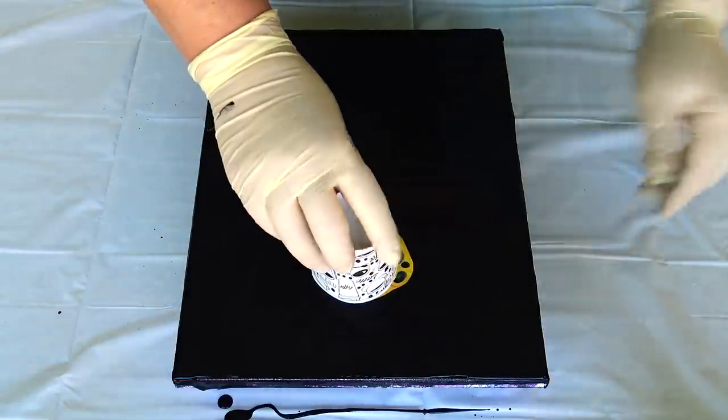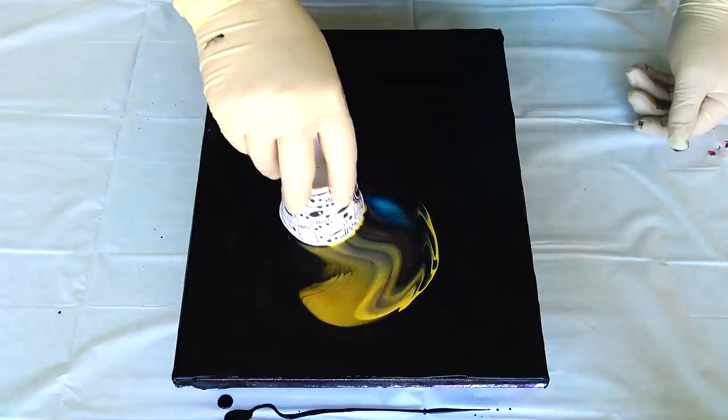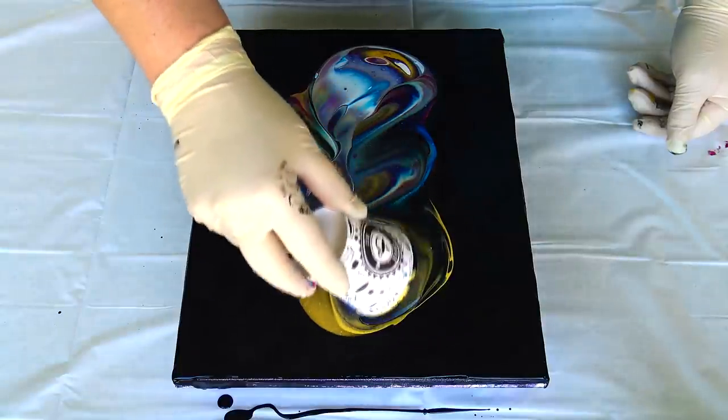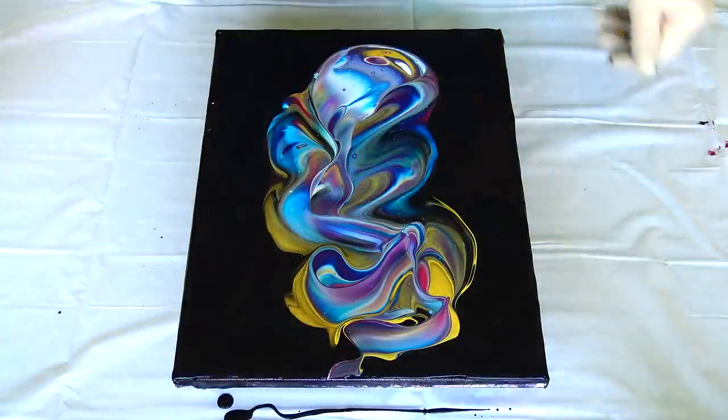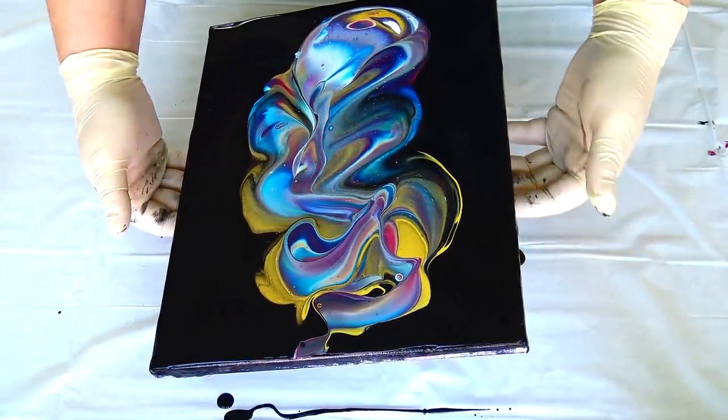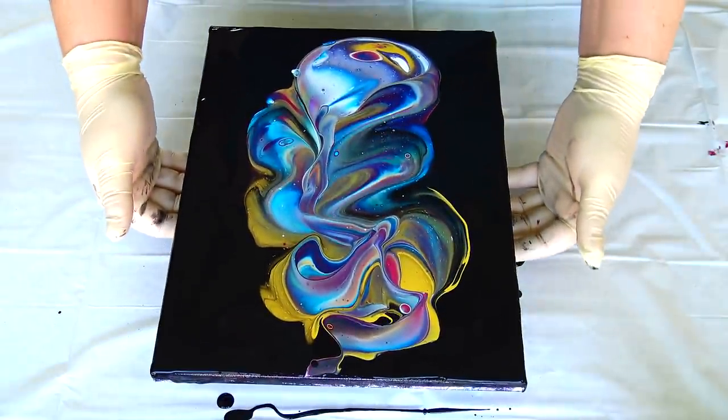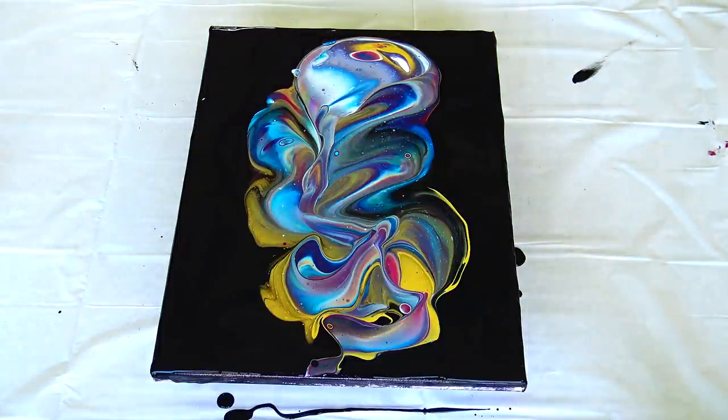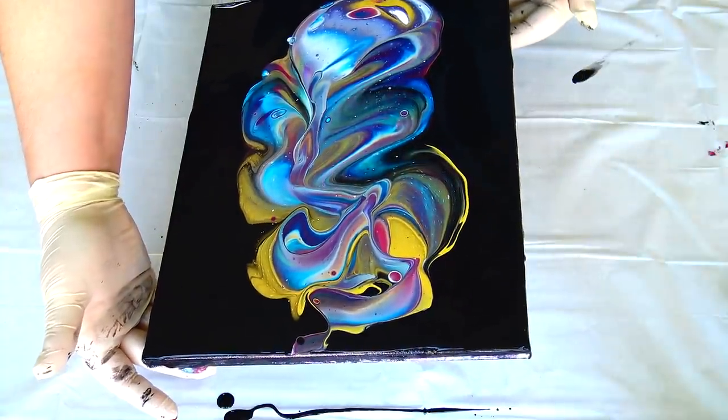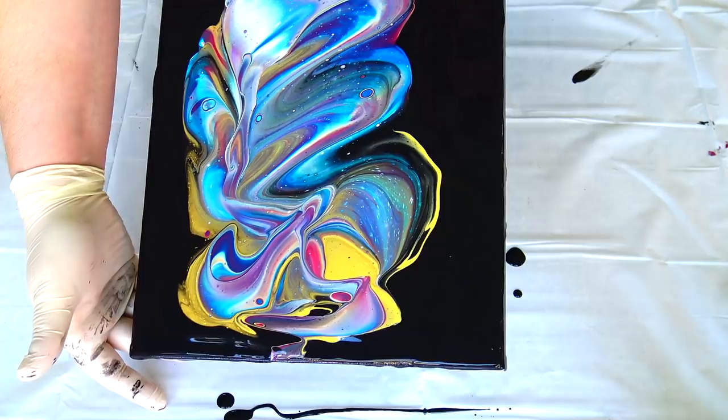Now, hole. Obviously I will not have a lot of negative space anyway, so let's tilt this and then I will torch it.